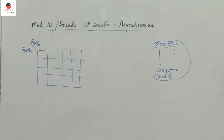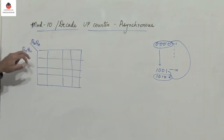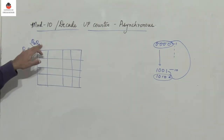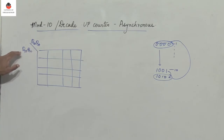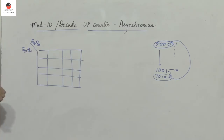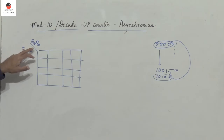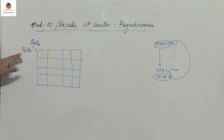Considering a four-variable K-map, the outputs of the flip-flops are QA, QB, QC, and QD, where QA is the LSB and QD is the MSB output.